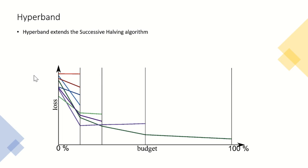And the algorithm will continue until it remains only one configuration. The idea is allocating more budget to the configurations which have better performance.